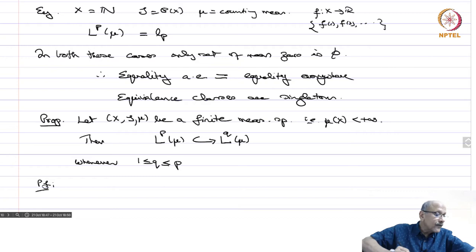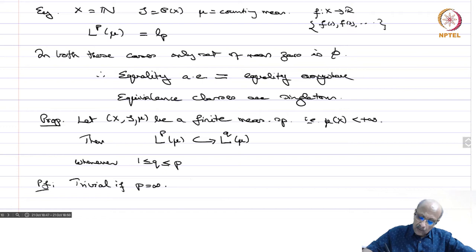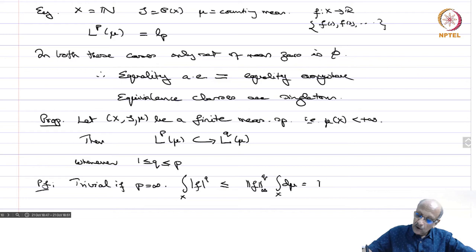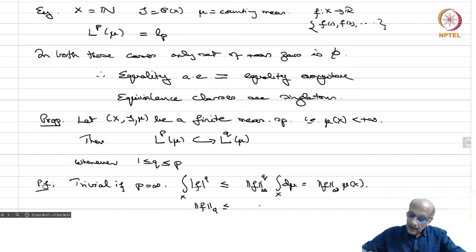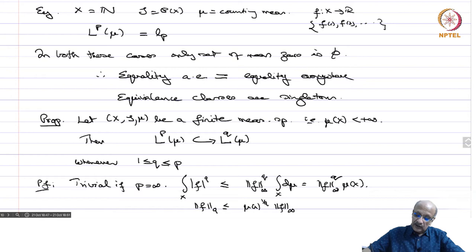Proof. The trivial case is p = ∞, because |f|^q ≤ ‖f‖∞^q · 1, so integrating gives ∫|f|^q dμ ≤ ‖f‖∞^q · μ(X), which is finite since μ(X) is finite. This shows that the inclusion map is a continuous linear map, and of course L∞ is contained in every Lq.